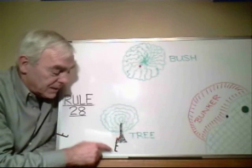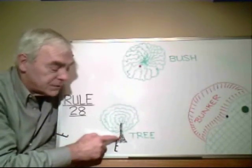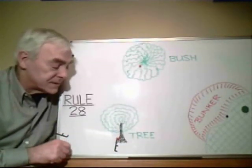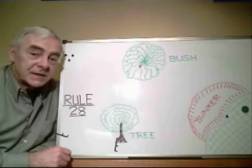to take relief under Rule 28 and drop his ball within two club lengths not nearer the hole than where his ball lies. So in other words, a radius of two club lengths from where the ball is at rest. That's option C under Rule 28.